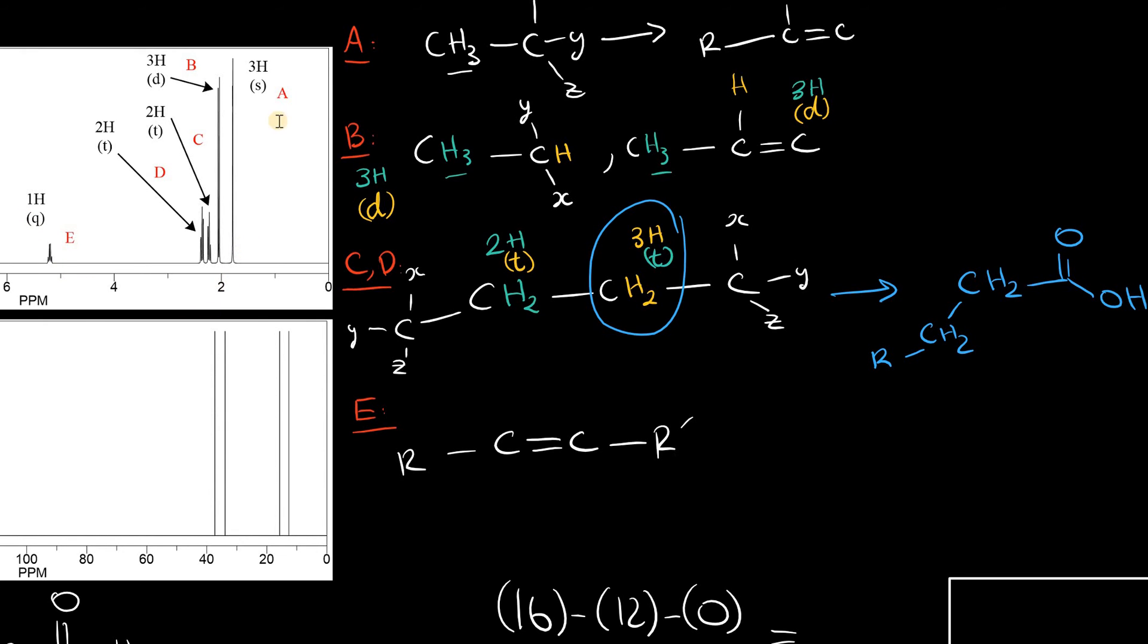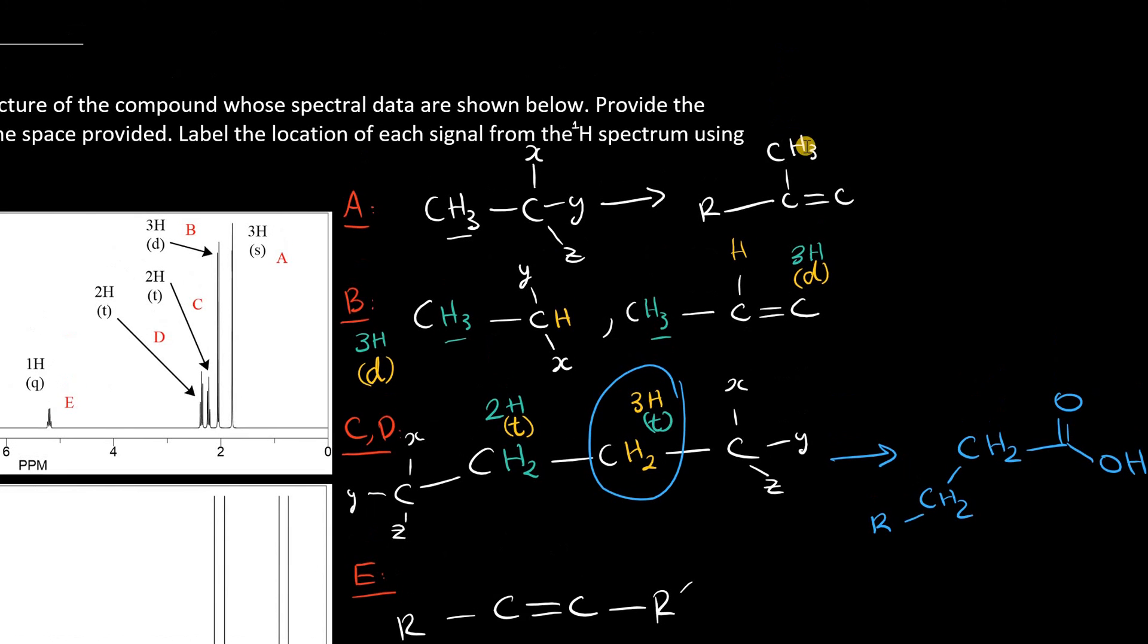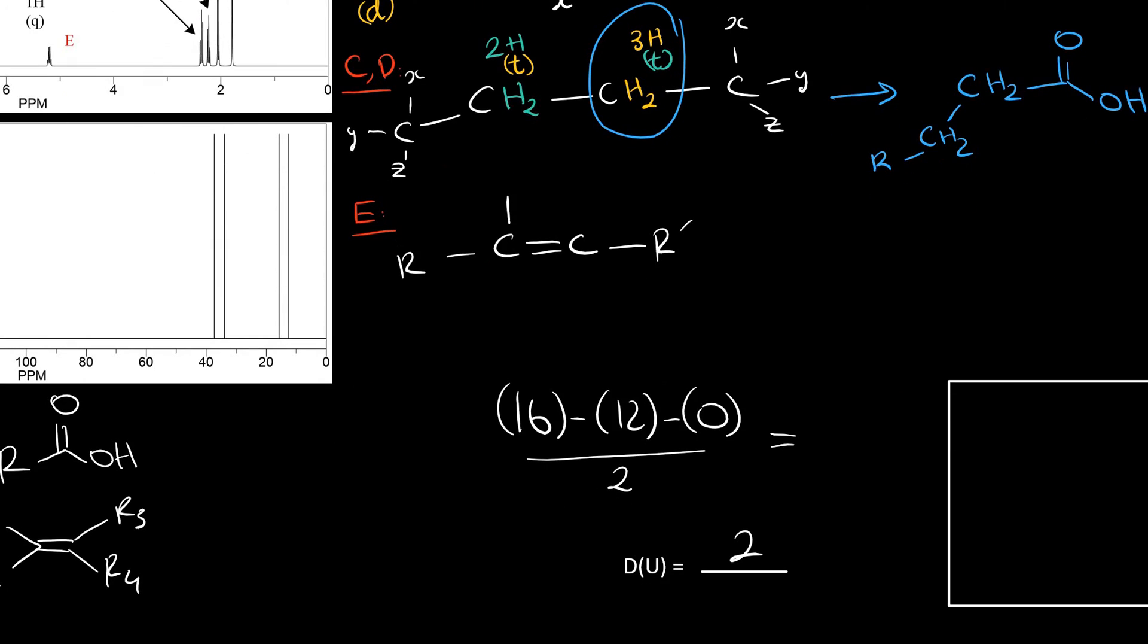Which is evidenced by this 3H singlet, which we called the methyl group directly bound to the alkene. So I can put in a methyl group right here and a hydrogen right here. And this would be a 1H quartet.